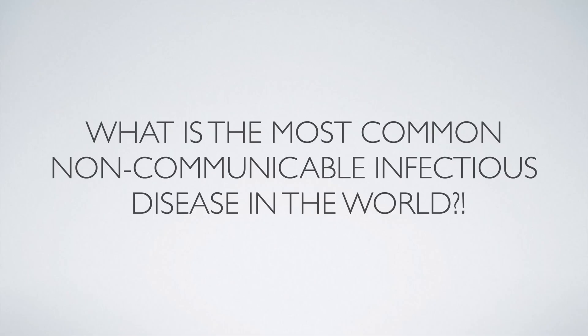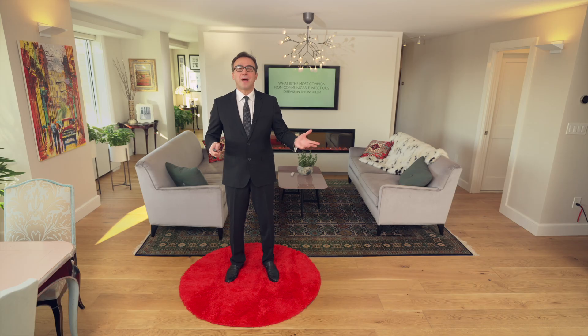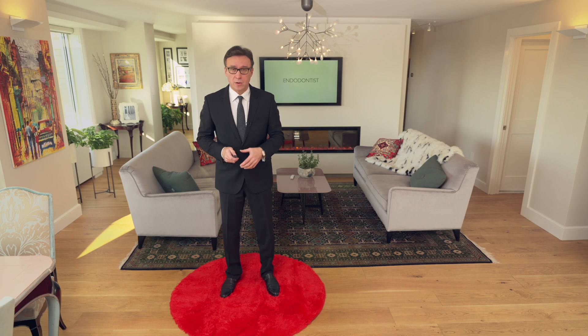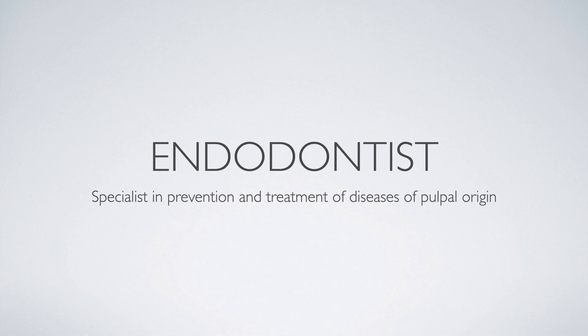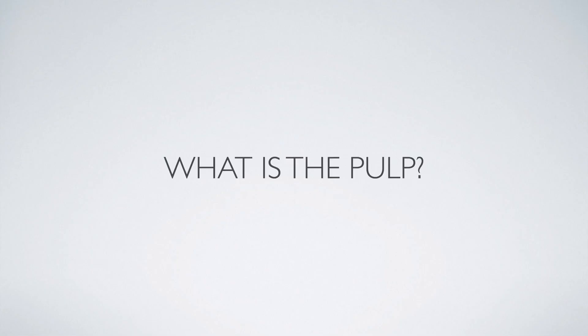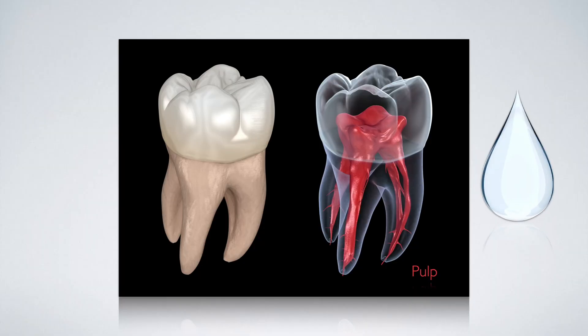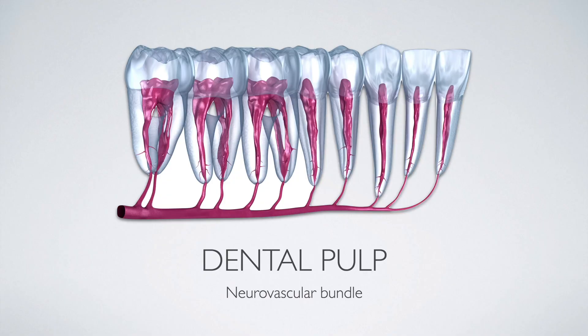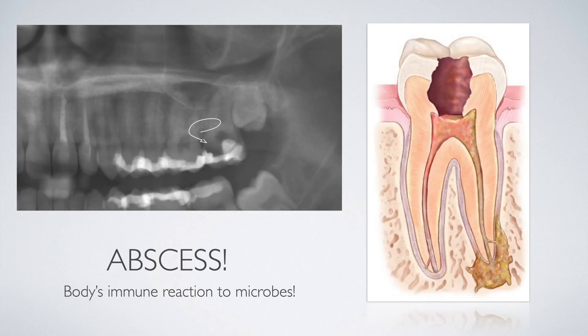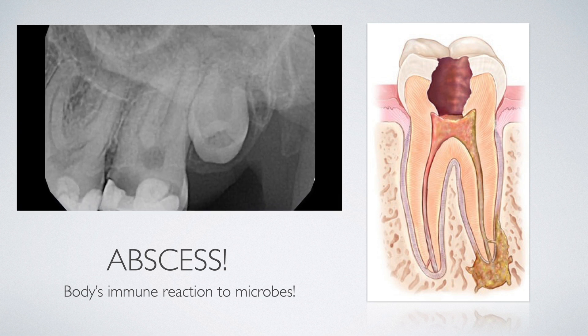What is the most common non-communicable infectious disease in the world? At cocktail parties, when people ask me what I do for a living, my answer always leaves them puzzled. What is an endodontist? An endodontist is a dentist who specializes in the prevention and treatment of diseases of pulpal origin. The dental pulp is a tiny bit of tissue inside your roots, something as small as half a drop of water in volume, containing a neurovascular bundle that gives your teeth sensation.